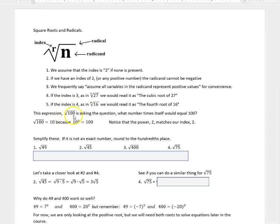This expression, the square root of 100, is asking the question: what number times itself would equal 100? The square root of 100 is 10 because 10 times itself, or 10 to the second power, is 100. Notice that the power 2 here matches our index of 2. See if you can simplify these, if you want to pause the video and try them. And if it's not an exact number, round to the hundredths place.